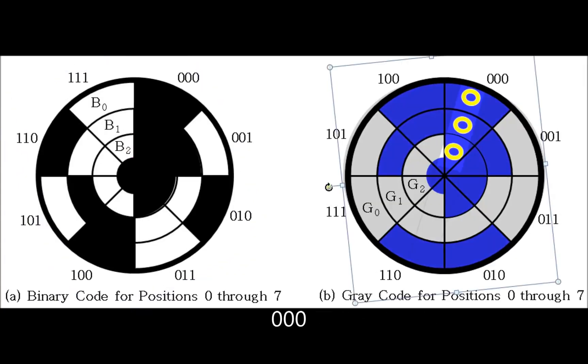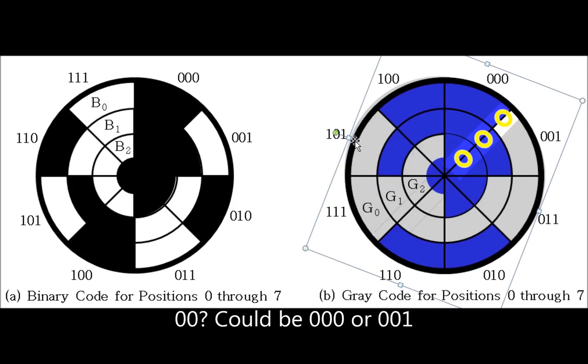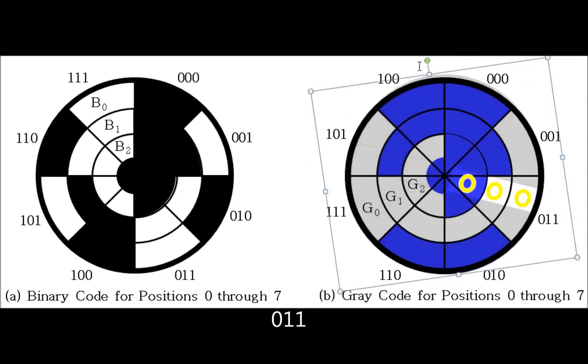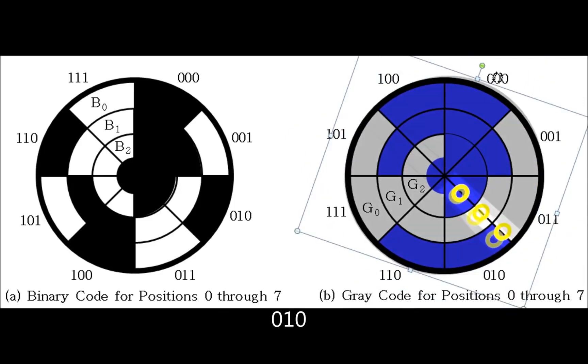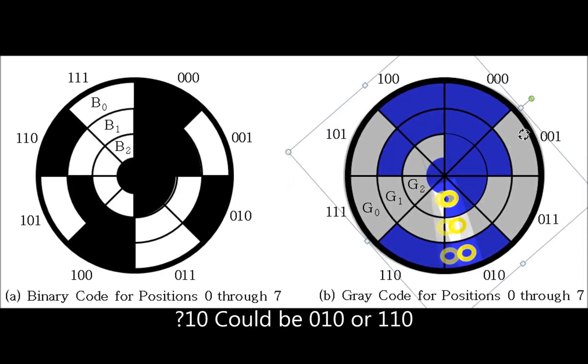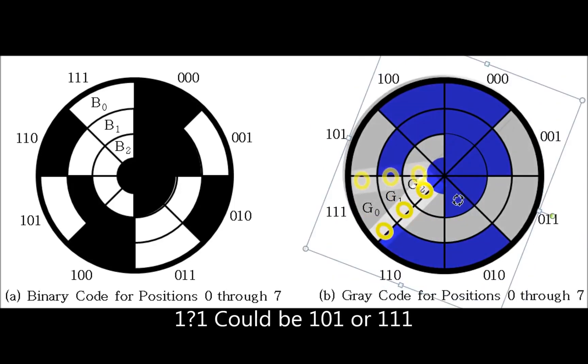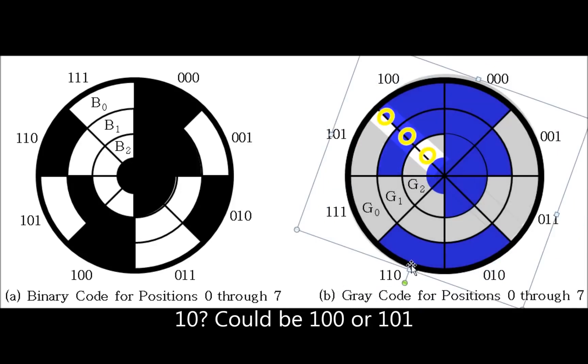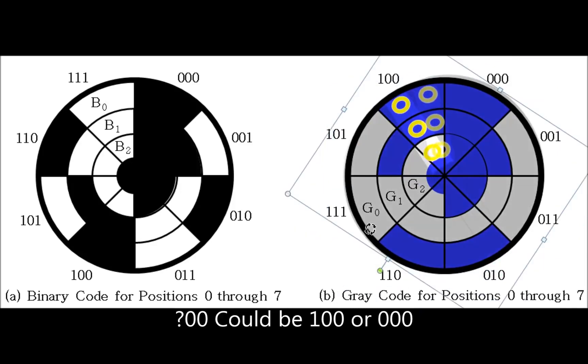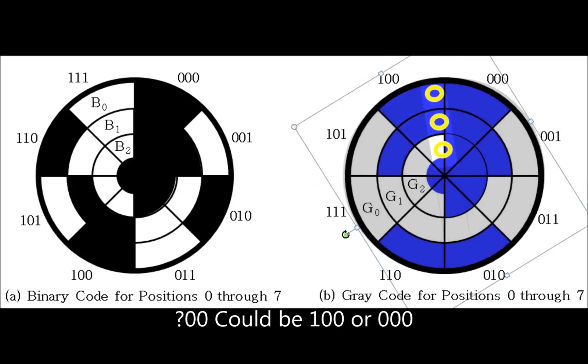Gray code, on the other hand, whenever there's a transition, you'll notice that it's only one bit that's changing. So between 0 and 1, it's just that first bit that's changing. Between 1 and 2, it's the second bit that's changing. Between 2 and 3, it's the first bit that's changing again. And so on. So as we go around, you'll notice that there's never an ambiguous state where there's a possibility of more than two resulting states, even going back between the seventh state and the zeroth state. So that is between 100 and 000. So great, we used the gray code for our shaft encoder.